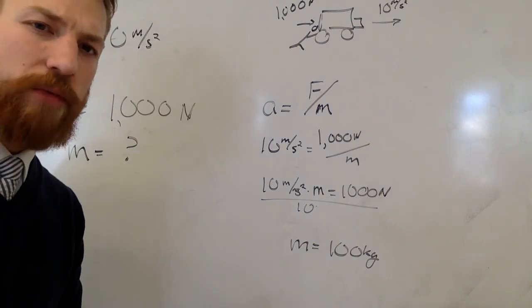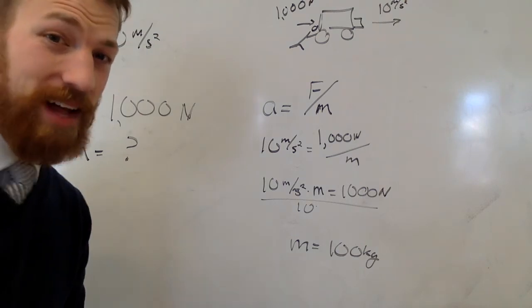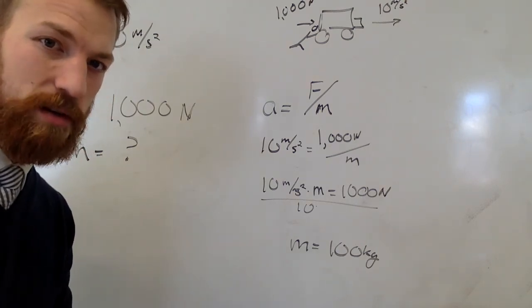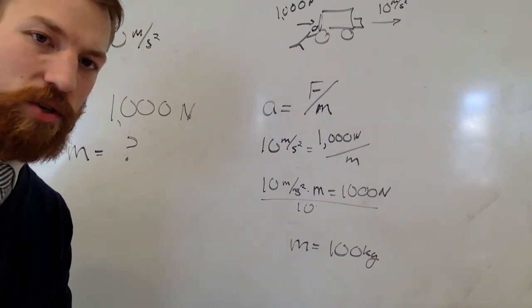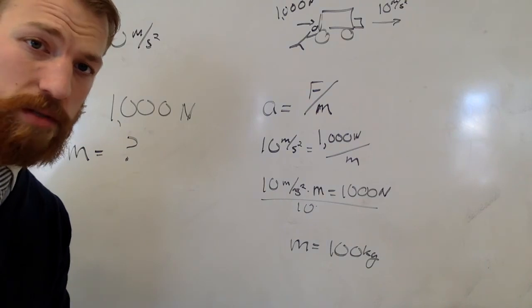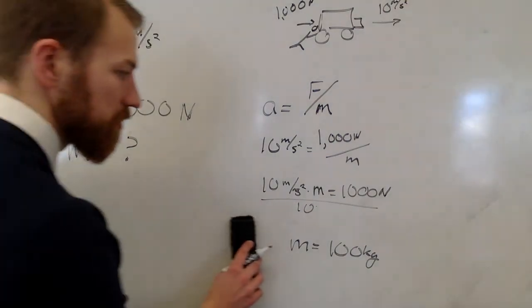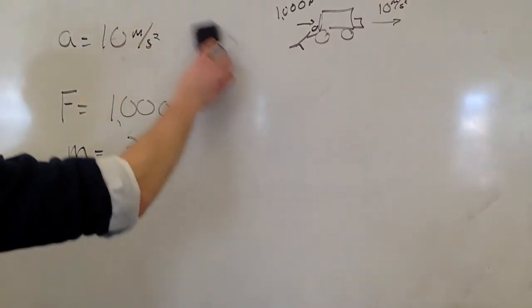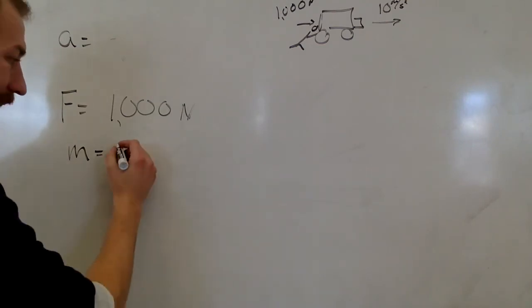Now, what if I were to fill this moving truck with all of my stuff? Right, and I have a lot of stuff. Let's say that I have 900 kilograms worth of stuff. How would I find out how quickly I could accelerate this truck, given the same amount of force? Well, we can use the same equation, except change our variables. So, I've added 900 kilograms, and I know that my force will stay the same, giving me a mass of 1,000.